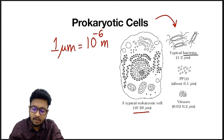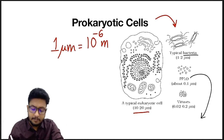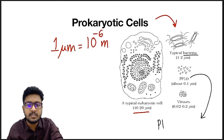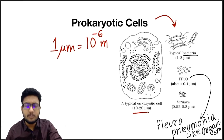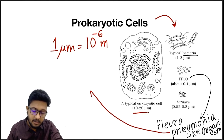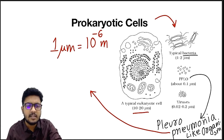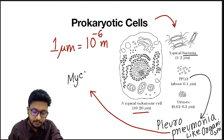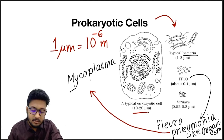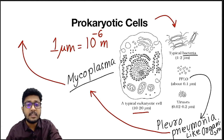Even smaller than bacteria is an organism called PPLO — Pleuro-pneumonia-like organisms — which are also included in prokaryotic cells. The name came from the fact that these organisms are responsible for pneumonia-like symptoms in cattle, cows, and buffaloes. PPLO are actually mycoplasma, and those mycoplasma are responsible for respiratory infections in cattle, not in humans.